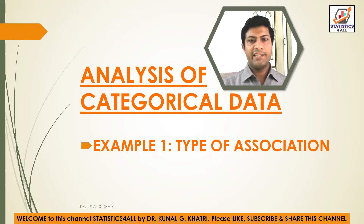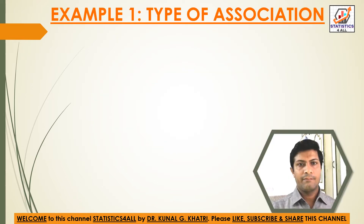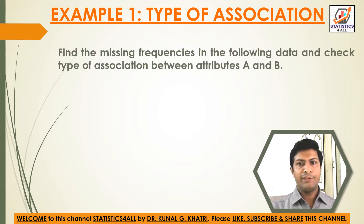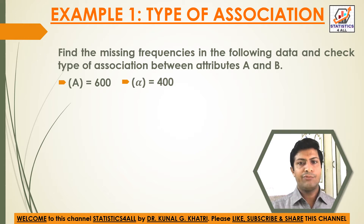Analysis of Categorical Data, Example 1 — Type of Association. Find the missing frequencies in the following data and check the type of association between attributes A and B. A is equal to 600, Alpha is 400, B is 700, and AB is 450.